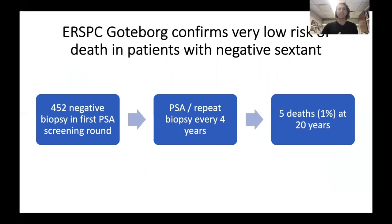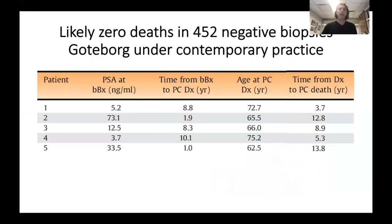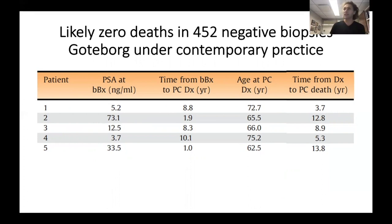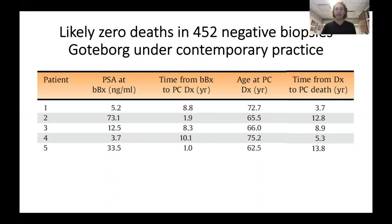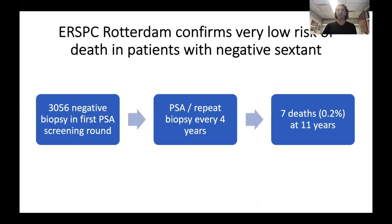Let's look at some more data. This is in the European randomized trial — 450 men with a negative biopsy followed for 20 years, and there were five deaths. None of these deaths would have happened in contemporary practice. The deaths occurred either because PSAs were really high, like 73 or 33 — these are the sort of men where we do a follow-up MRI because they probably had an anterior tumor, clinically indicated, obviously. Or there were men who had screening ceased early because of age, because that was the protocol in the ERSPC, and we don't do that now. If a man has a high PSA, we carry on following them even if they are aged over 70.